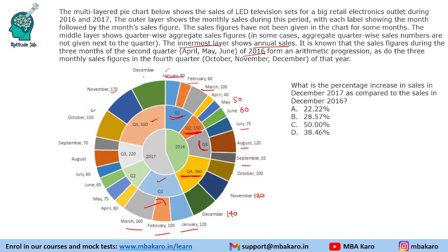What is the percentage increase in sales in December 2017 compared to December 2016? The 2017 total is 500, which is 150 plus 170 equals 320, so December 2017 sales is 180. December 2016 is 140 because that quarter is in AP. So the increase is 40, and 40 by 140 is 2 by 7, which equals 28.57 percent.